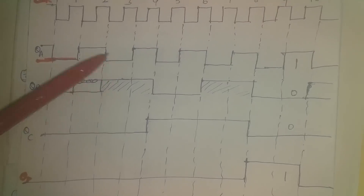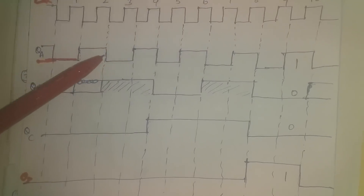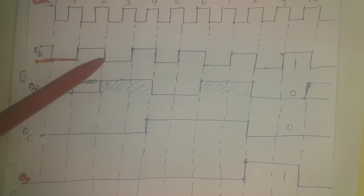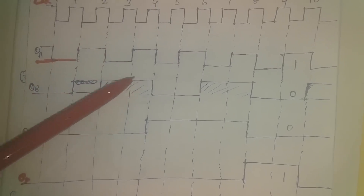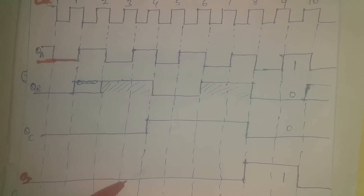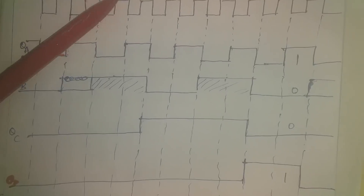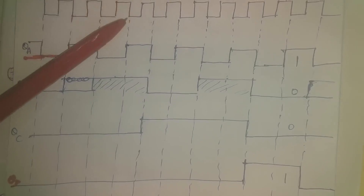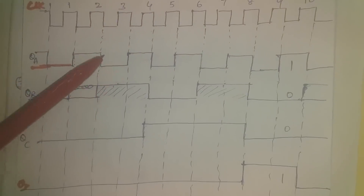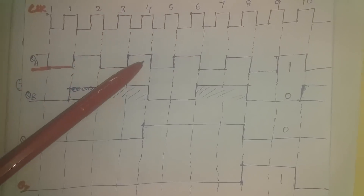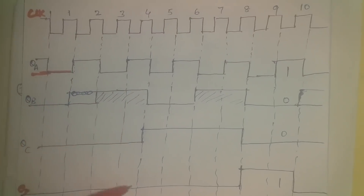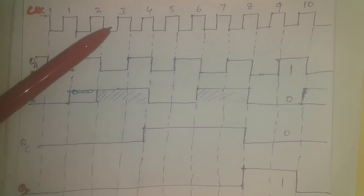At the negative edge of the second clock, QA toggles to low. Since QA is going low, QB undergoes a transition at that negative edge and goes high. QC continues low; QD continues low. At the negative edge of the third clock, QA toggles to high; QB remains high; QC and QD remain low.